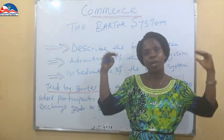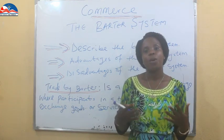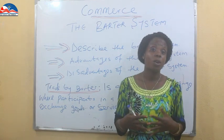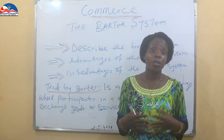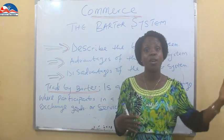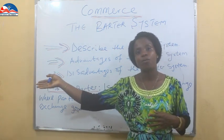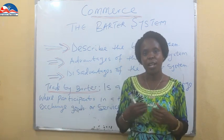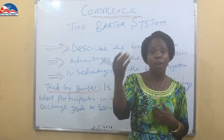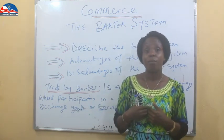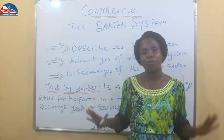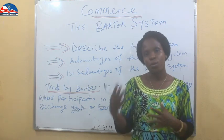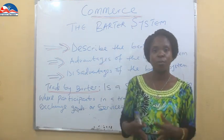When I told you about how commerce was evolving, we saw that people were producing more than what they actually needed, and some people were not producing all that they needed. So those who had some things others did not have would go and exchange. For example, if I have garlic and I need rice, and I don't farm rice, I'll go to the rice farmer to exchange my garlic for the rice. Now let's go to the advantages and disadvantages of the barter system.